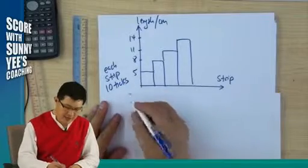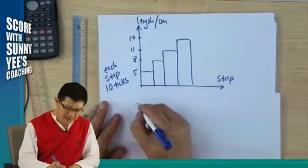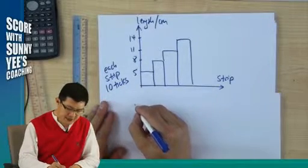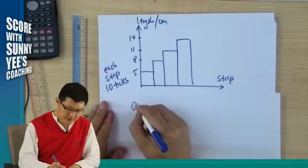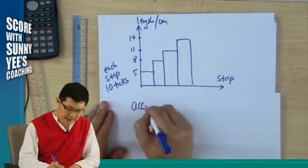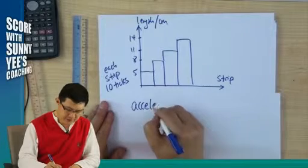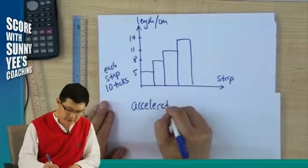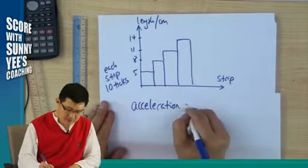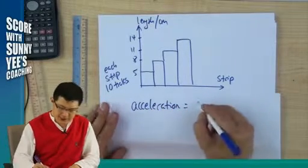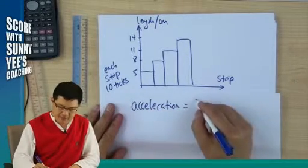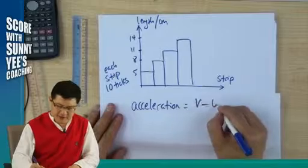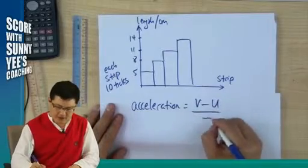If we were asked to find what is the acceleration, how do we find the acceleration? Acceleration will be v minus u over t.